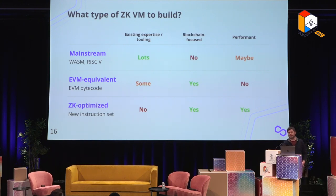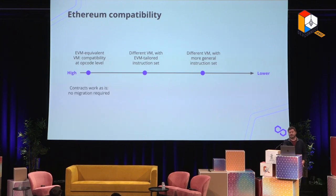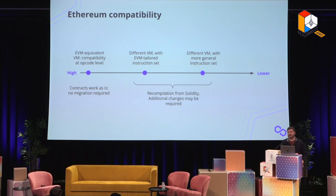Let's talk about EVM equivalence and Ethereum compatibility. The highest level of equivalence is binary compatibility — executing EVM bytecode directly — which is attractive because your contracts just work as-is with no migration. Other approaches don't have binary compatibility but can still execute contracts compiled from Solidity, providing compatibility at the Solidity level. You can be on a spectrum of how close you want to be to EVM, with different VMs either tailored to EVM execution or more general with a different instruction set.